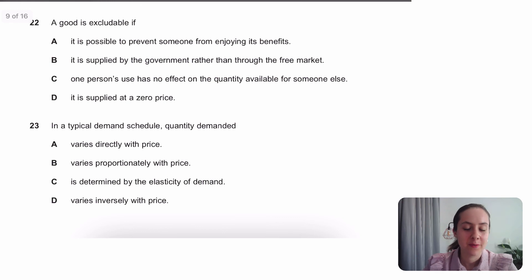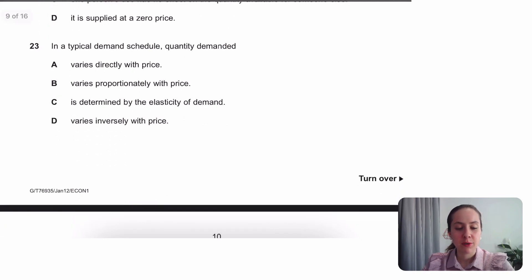A good as excludable definition. So we're looking for something that you can prevent somebody from using it. That's the one there. In a typical demand schedule, it just means the demand curve. Quantity demanded varies. Not directly. Directly would mean as price increases, quantity increases. That's a supply curve. So we're looking for something that would be the opposite. It would be like as price increases, quantity decreases. So we're looking for inversely.